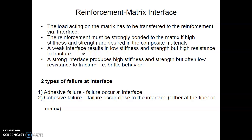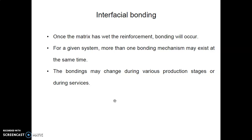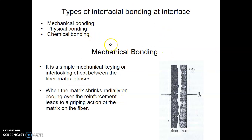A weak interface results in low stiffness and strength but high resistance to fracture. A strong interface produces high stiffness and strength but often low resistance to fracture — brittle behavior. Two types of failure at interfaces are adhesive failure, which occurs at the interface itself, and cohesive failure, which occurs close to the interface but not exactly on it. Once the matrix has wet the reinforcement, bonding occurs at the interface. For a given system, more than one bonding mechanism may exist at the same time, and bonding may change during production stages or during service. There are three types of interfacial bonding: mechanical, physical, and chemical bonding.